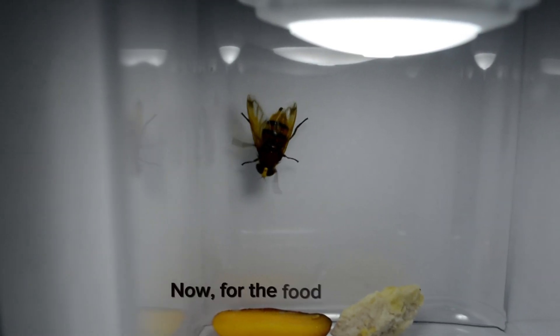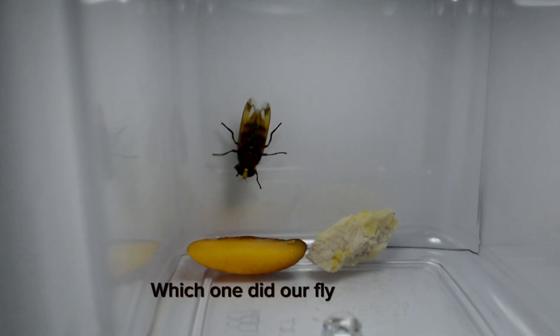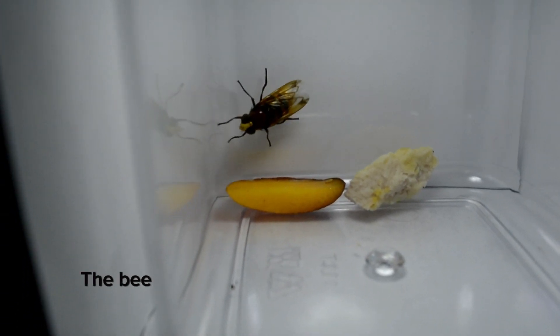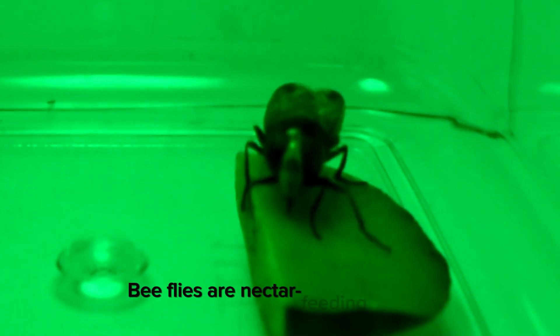Now, for the food source, we offered chicken and peach. Which one did our fly prefer? The bee fly showed a clear preference for the peach. Bee flies are nectar-feeding insects, so peach is a more enticing option.